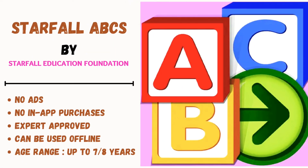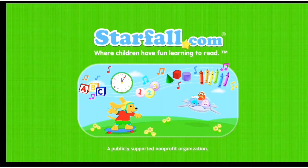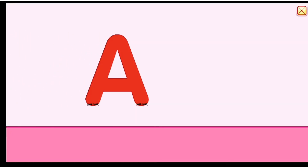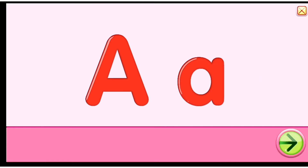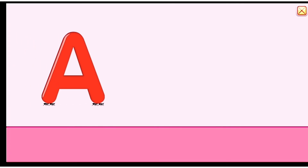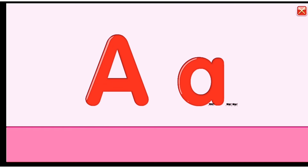Next app we'll be reviewing is Starfall ABCs — also one of our favorites. This is completely free and you can use it offline. This app is filled with so many activities: your children learn A to Z, new words, pronunciation, capital letters, small letters, spelling, vowels, and geometry. There are also math activities in there too — all absolutely free, and you do not need internet to access any of it.